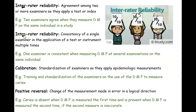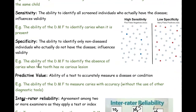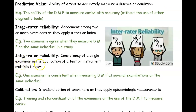Intra-rater reliability means one person — one examiner — is consistent. If I examine your mouth and give you a DMFT score of 5, then the next week I give you a 5 again, and again a 5, I'm consistent — that's good intra-rater reliability. It's similar to reliability overall, but specifically one examiner being consistent throughout the entire time.